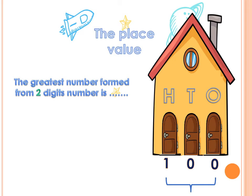And now, with the place value. Do you remember the place value? In the previous, we take the ones and the tens. If we have a number from two digits, the first digit will be in ones and the second digit will be in tens. So, what is the greatest number formed of two digits? What is the biggest digit we have? 9. So, the greatest number formed of two digits is 99. If we add 1 to 99: 9 plus 1 equals — after 9, 10. So, we will put 0 and carry up 1. Then, 9 plus 1 again equals 10. So, 99 plus 1 equals 100.